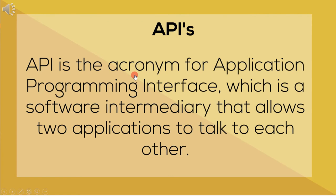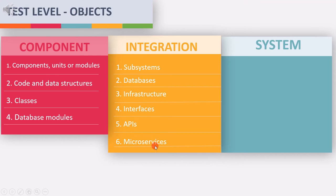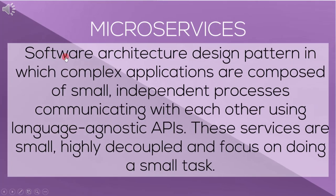Next is APIs. API stands for Application Programming Interface, which is a software intermediary that allows two applications to talk to each other — that means API is an interface, and interfaces are test objects of integration testing. The last object is microservices. Microservice is a software architecture design pattern in which complex applications are composed of small, independent processes communicating with each other using language-agnostic APIs. These services are small, highly decoupled, and focused on doing a small task, so microservices provide interfaces that are test objects of integration testing.